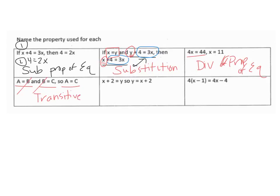Next one: x plus 2 equals y, so y equals x plus 2. Notice how the left-hand side and the right-hand side flip-flopped — that's called the symmetric property. You don't have to write symmetric property of equality or symmetric property of congruence; it's okay if you just write symmetric. Same with transitive and reflexive.